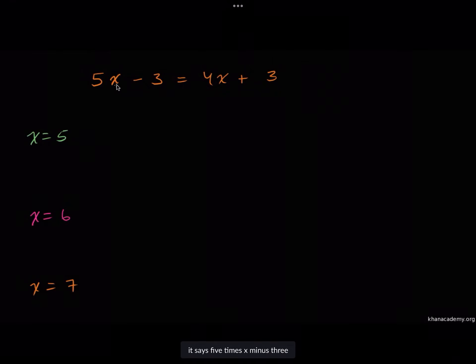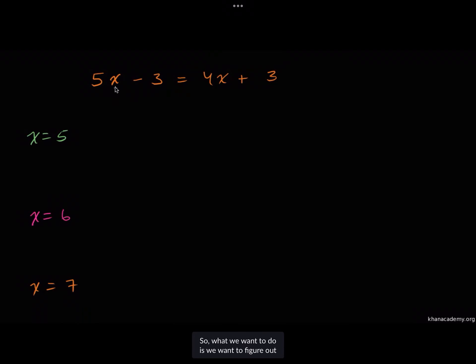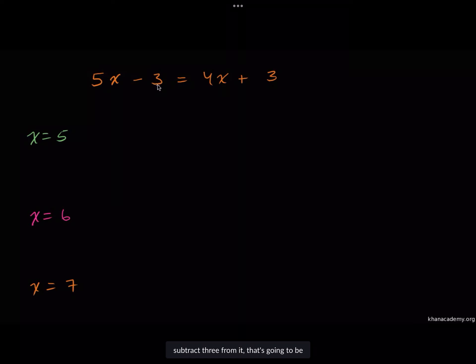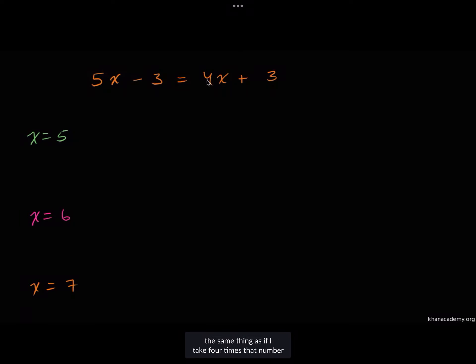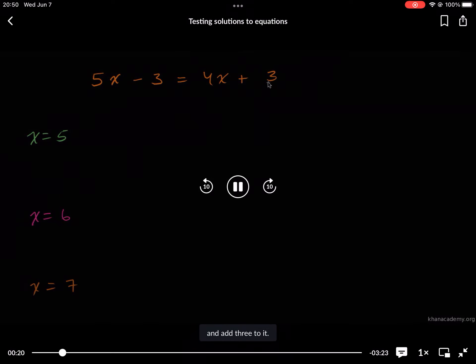We've got an equation here. It says five times x minus three is equal to four times x plus three. What we want to do is figure out an x that satisfies this. So there's some number that if I take five, multiply it by that number, subtract three from it, that's going to be the same thing as if I take four times that number and add three to it.